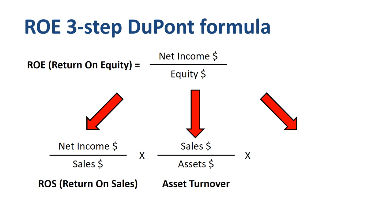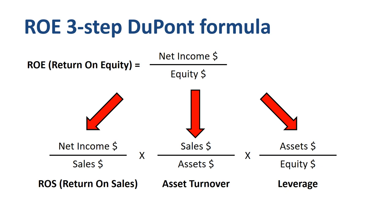For both ROS as well as asset turnover, the higher you can push this, the better off you are, financially speaking. The last element of the DuPont three-part equation is leverage, assets divided by equity. Whether this should be high or low is a much discussed question, and I don't think there is a definitive answer.